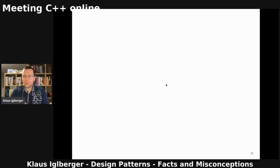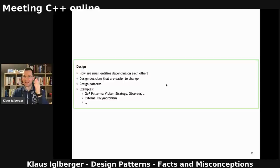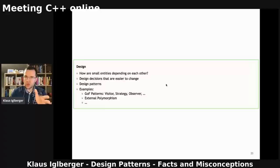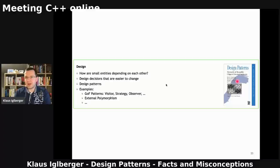Now let's explain what actually is a design pattern and where in the realm of software development it is placed. I would argue that in the center is software design — managing dependencies between things, usually the smaller things. This is also something that we can change a little more easily. And this is where design patterns come into play: solutions for how we can detangle software entities in different ways. This is where well-known design patterns come in — Visitor, Strategy, Observer — patterns found in the famous 1994 design patterns book, which we call the Gang of Four book.